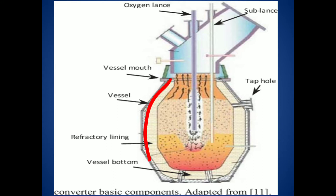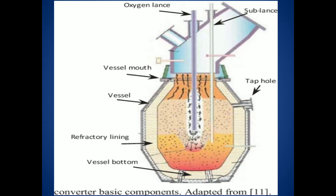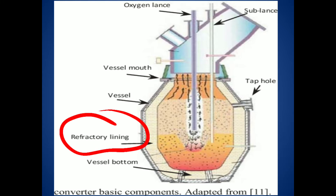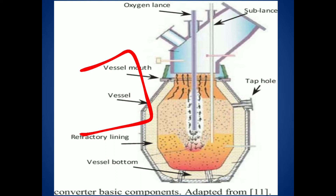The process uses an LD converter. This converter is a closed bottom, pear-shaped vessel. It is lined with a basic refractory lining material.